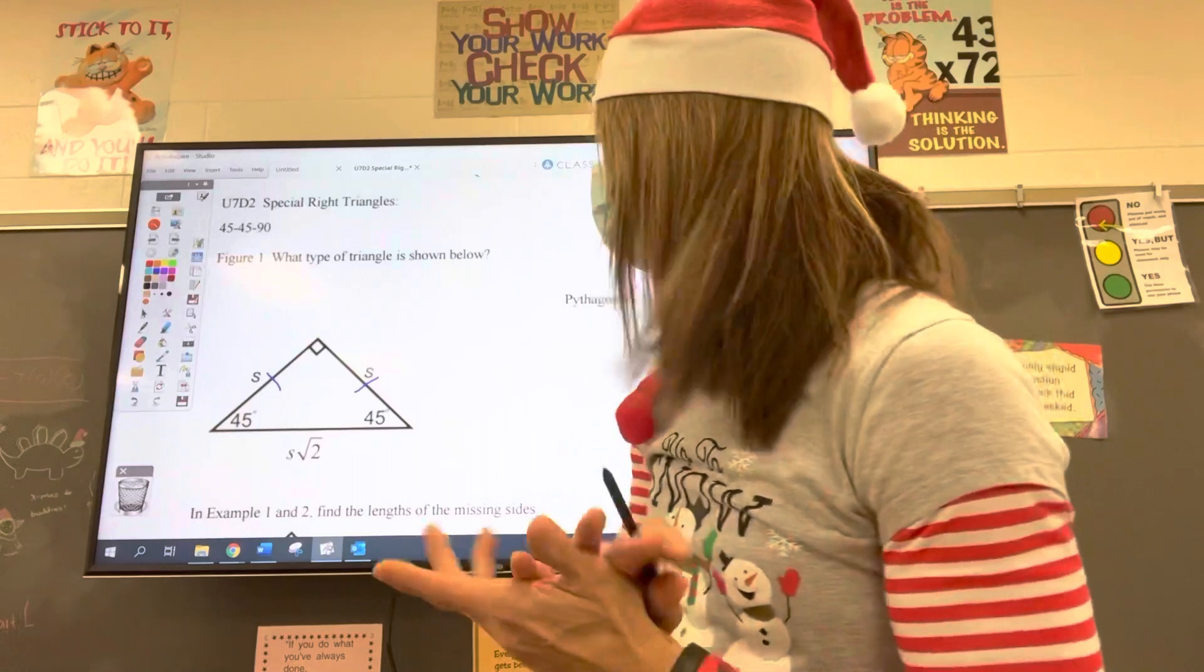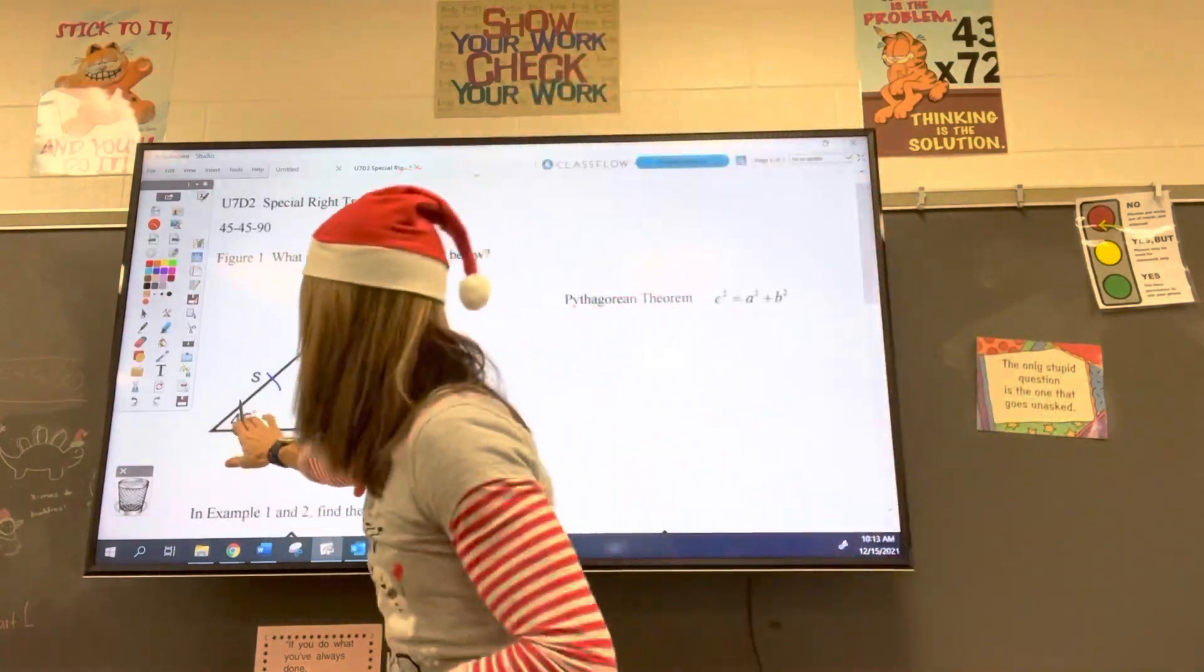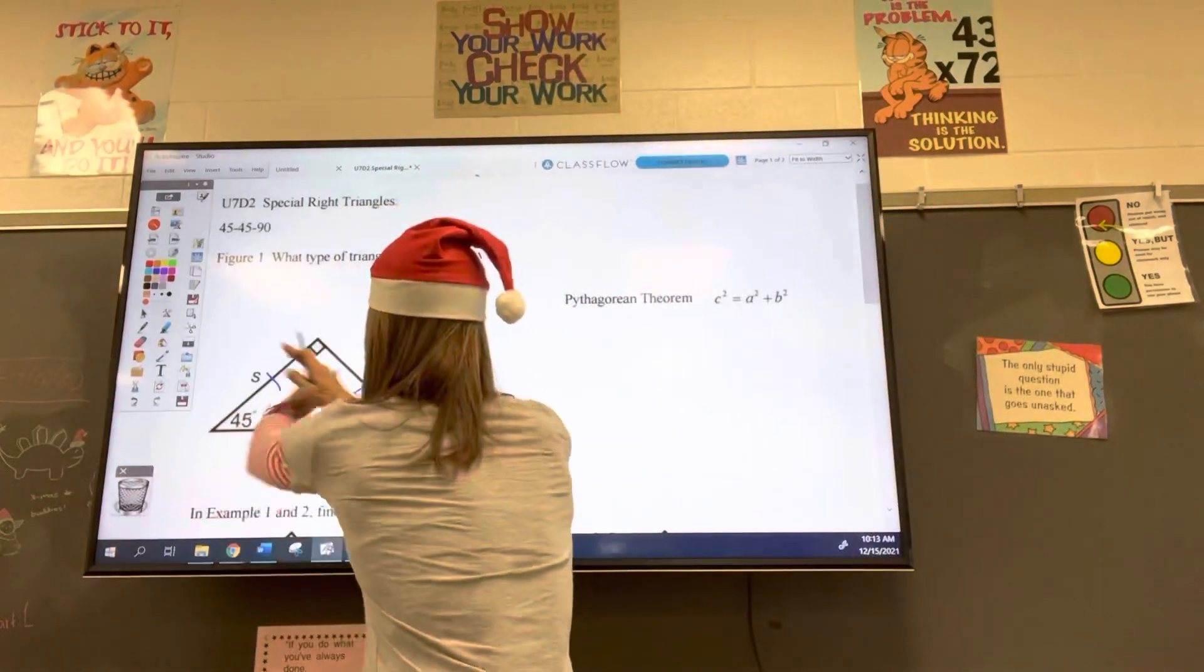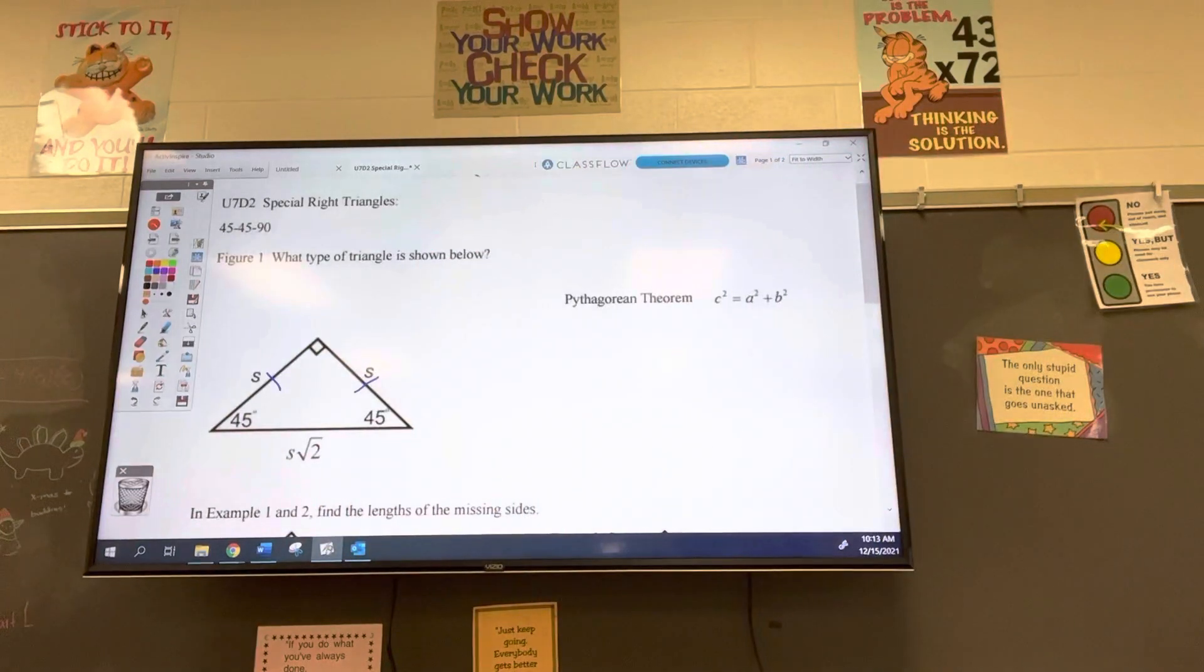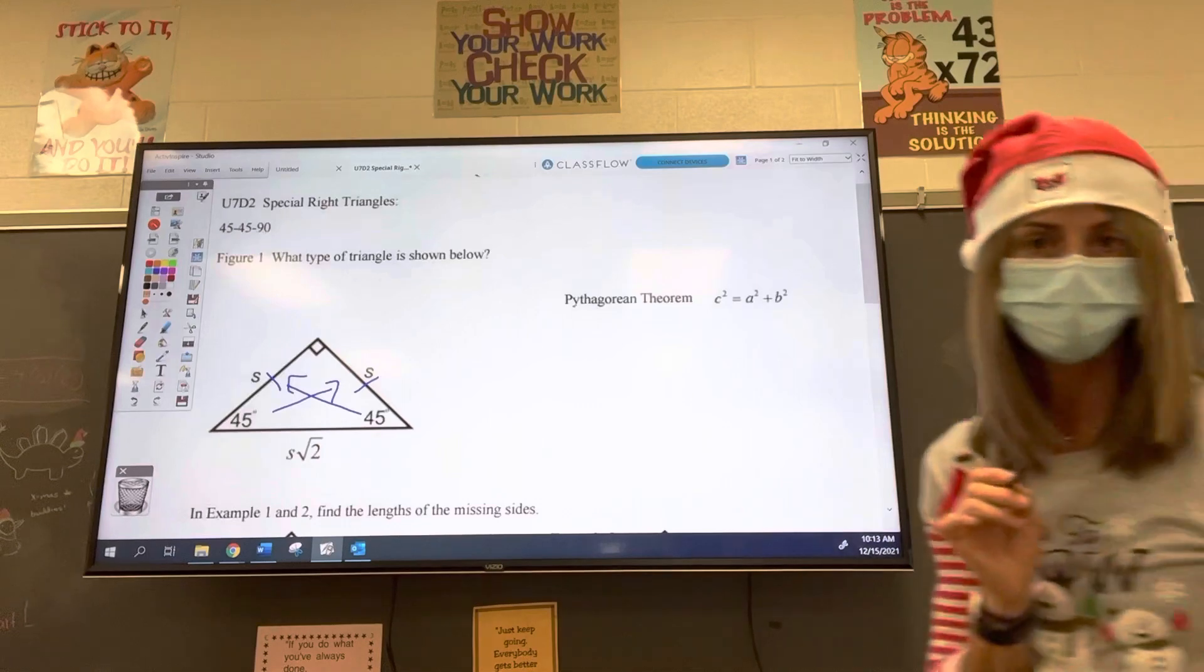Those sides are the same length. We also know that from the base angle theorem because if these angles are the same, the sides across from them are the same.